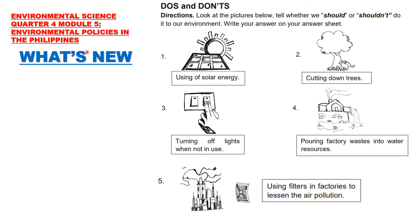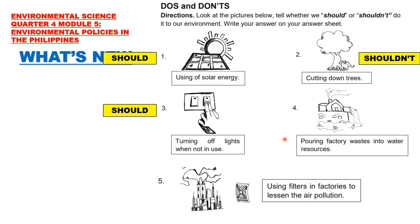What's New? Do's and Don'ts. Look at the pictures below and tell whether we should or shouldn't do it to our environment. Number 1: Using solar energy — should. Number 2: Cutting down trees — shouldn't. Number 3: Turning off lights when not in use — should. Number 4: Pouring factory waste into water resources — shouldn't. Number 5: Using filters in factories to lessen air pollution — should.